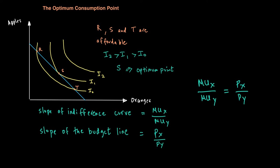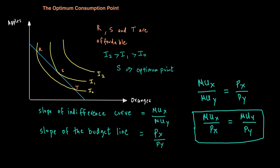If we rewrite this, it becomes MUX over PX equals MUY over PY — which is the same equation as our equi-marginal principle developed in utility theory. What is good about this analysis is that without directly measuring the consumer's utility, we are able to derive the same result: marginal utility per dollar spent must be the same for all goods for a consumer to maximize utility.